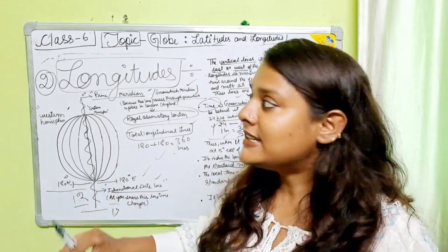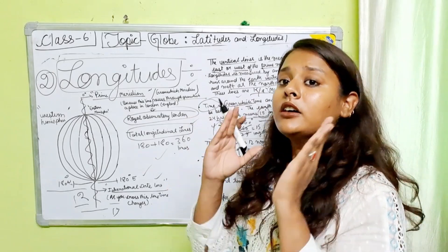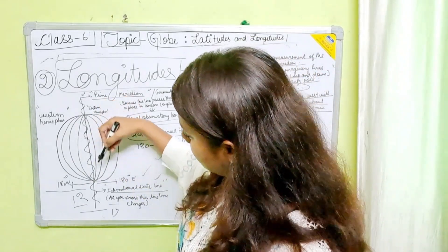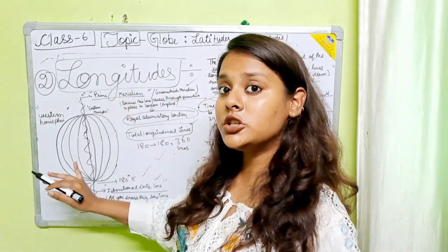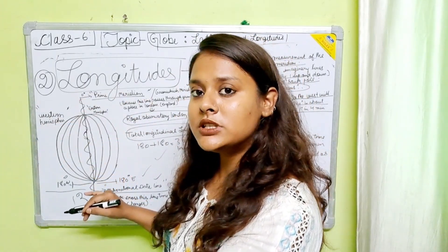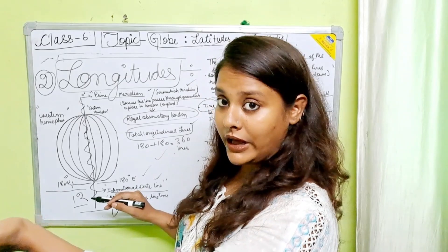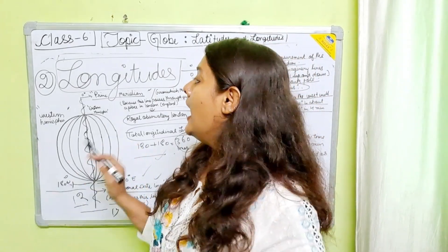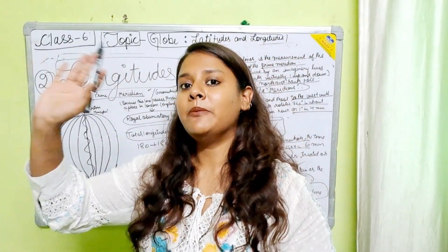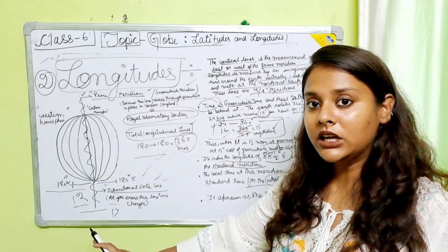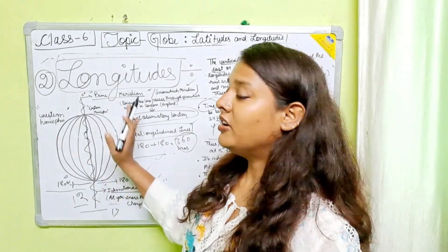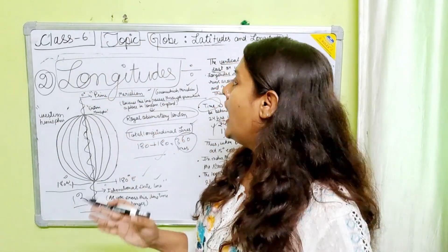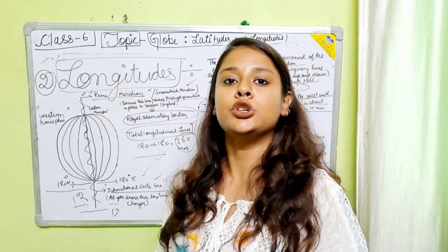You can also learn latitudes and longitudes by this diagram: when lines are vertical, it is longitude; when horizontal, it is latitude. Total number of latitudes: 181 — one of which is the equator. Total number of longitudinal lines: 360. For latitudes the imaginary line is the equator; for longitudes, the imaginary line is the prime meridian. Longitudes deal with the measurement of west and east, and latitudes deal with the distance between north and south.